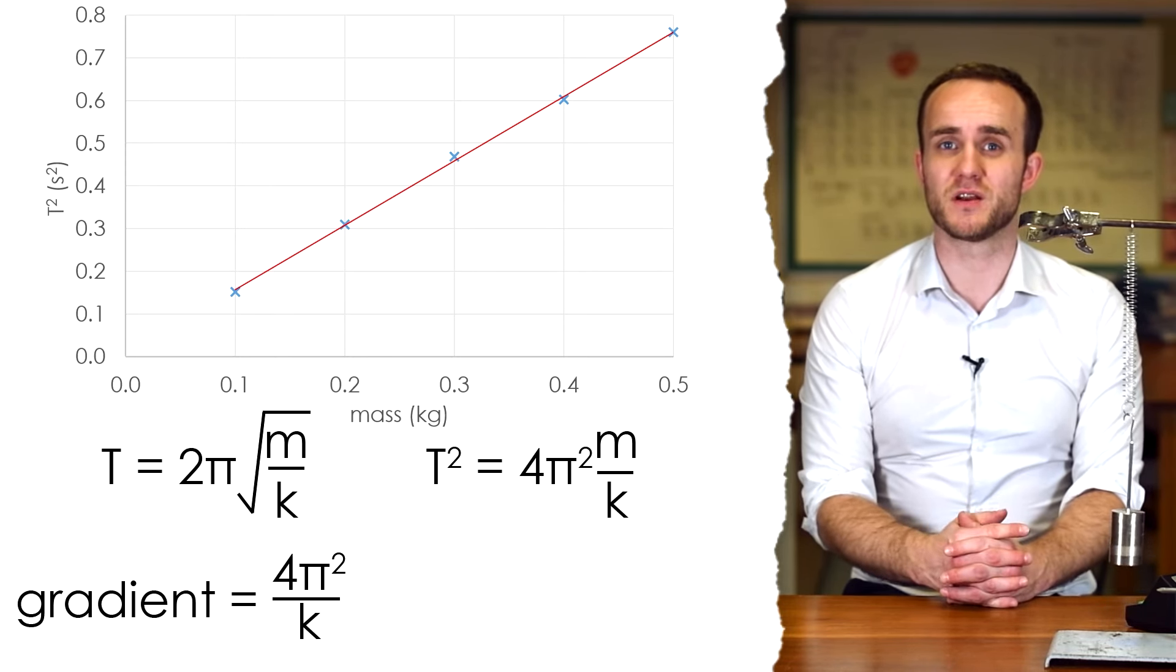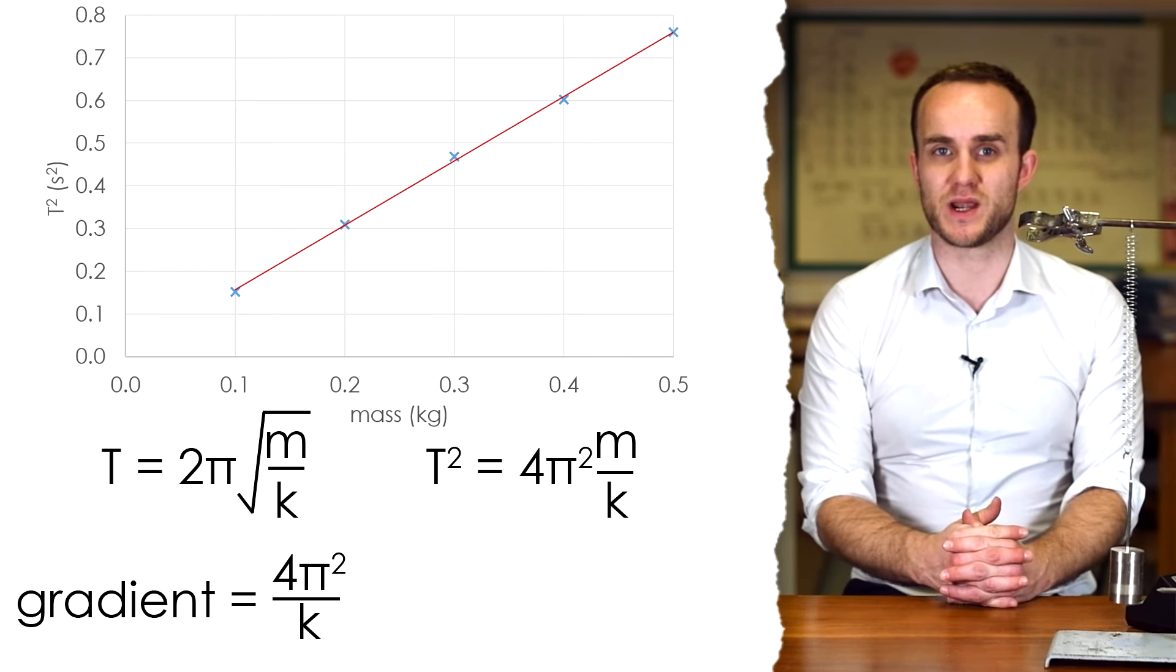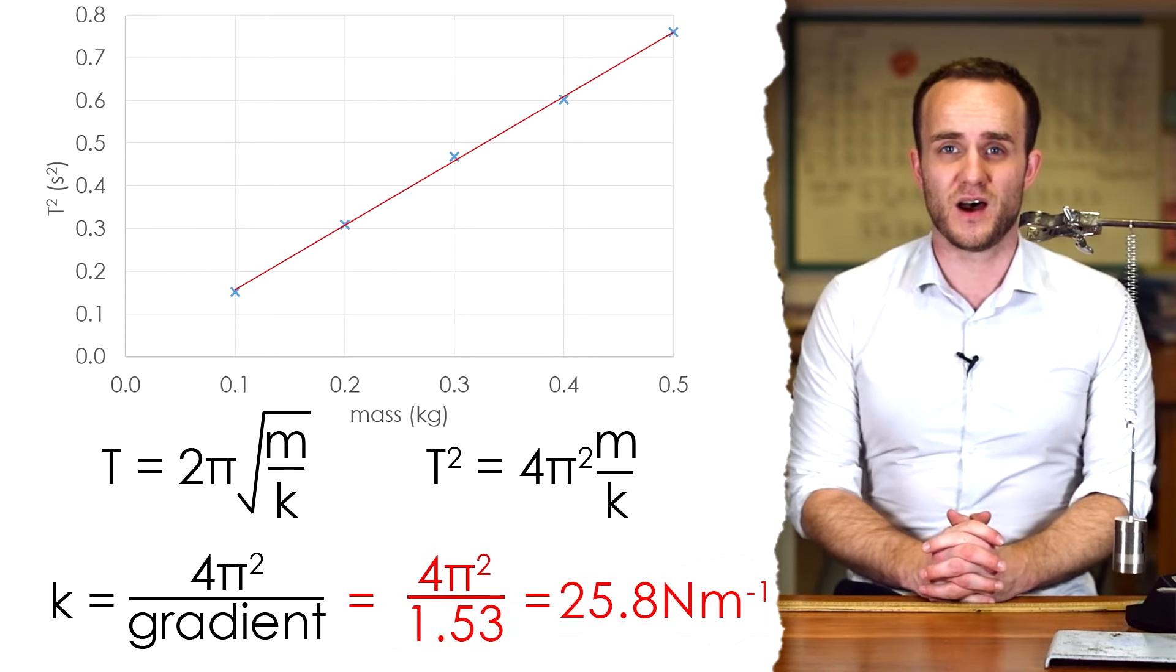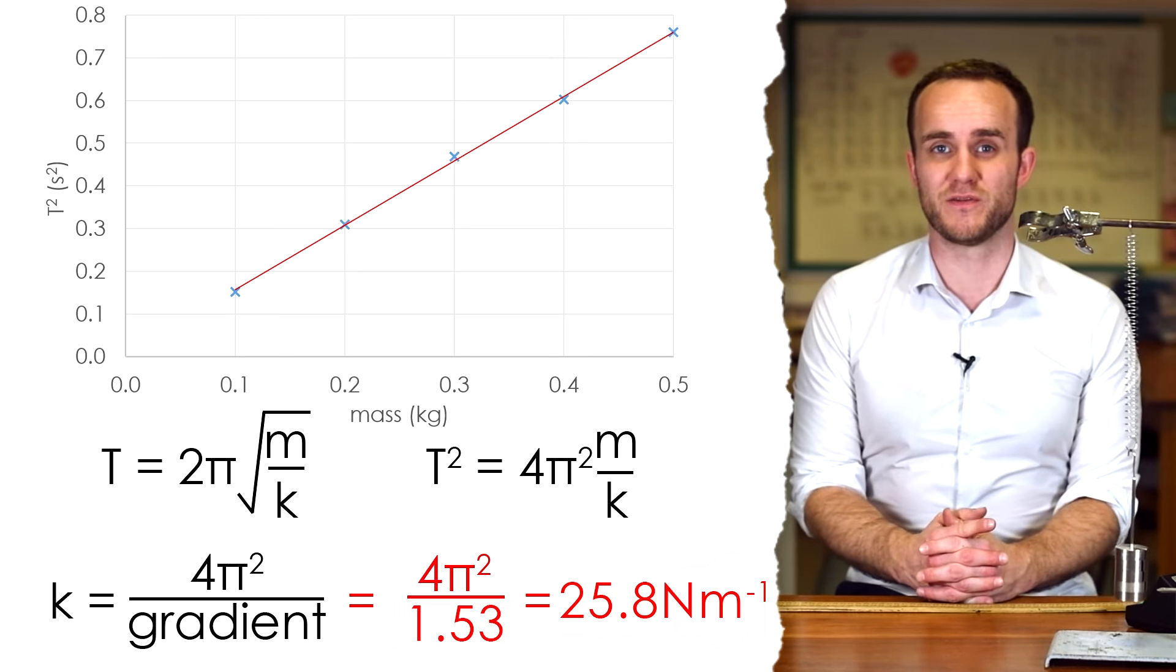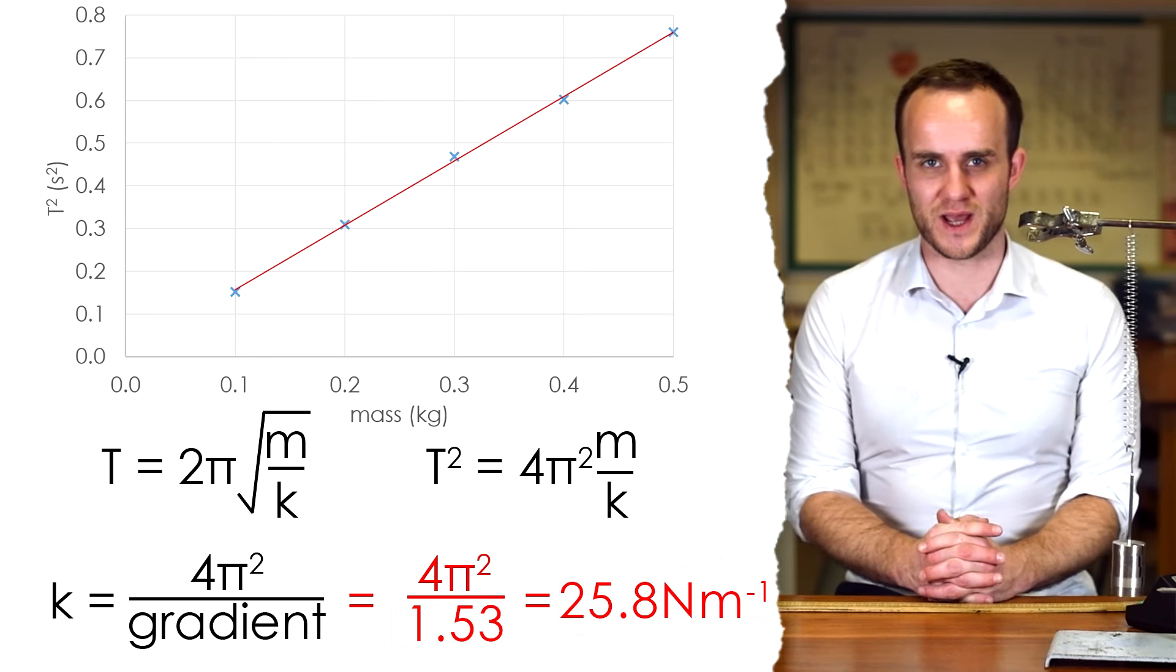The gradient of this is going to be equal to 4π squared over k. And just like last time, I can swap the gradient and k over and see what k ends up being. To verify this, I can actually carry out just the normal Hooke's law experiment to have a graph of force against extension, and that will give me an accurate value for k, and I can compare the two.